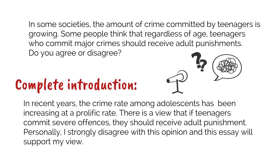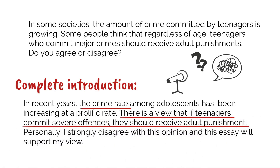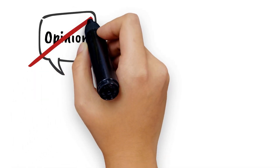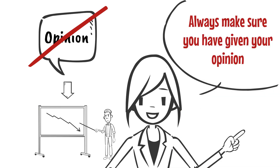As you can see, in the background sentence the writer has paraphrased the statement from the question, reflecting the topic which is the growth of crime committed by teenagers. In the detailed background sentence, the writer has mentioned the viewpoint from the question. Finally, in the thesis the writer has clearly stated his opinion. Failing to write your opinion in an argument essay can make you lose marks heavily, so always make sure you have given your opinion.